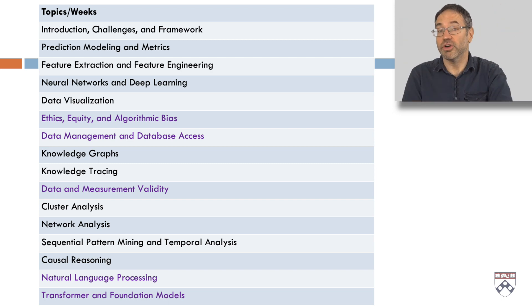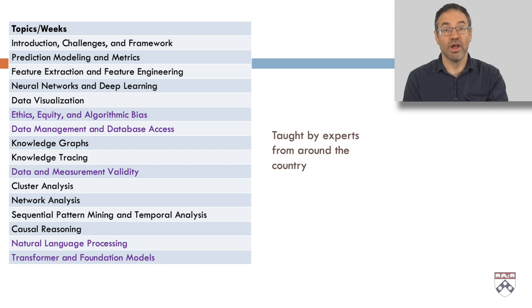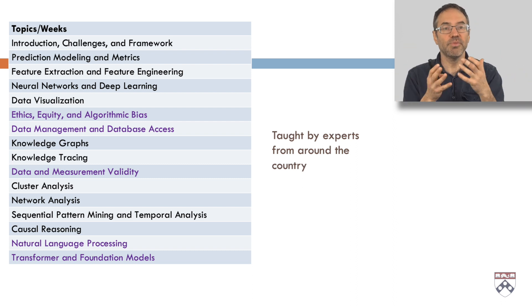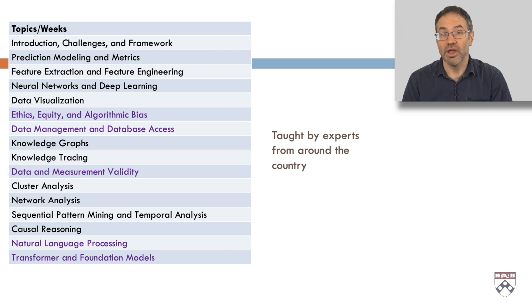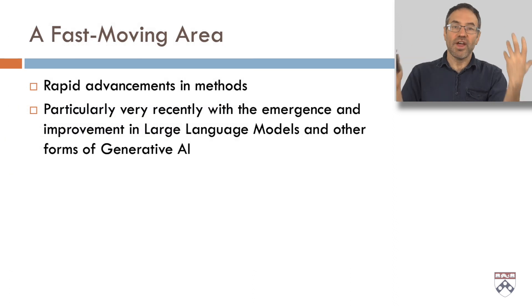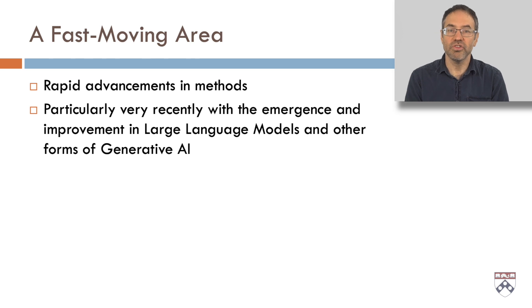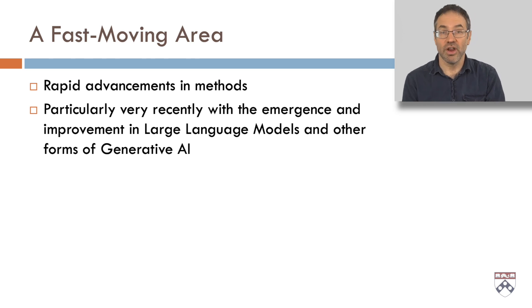So that's a lot of stuff to cover — stay with us, it's going to be fun and we're going to learn a lot together. These 17 topics were too much for us here at Penn or Florida to cover by ourselves, so we've brought together a group of great experts from around the country — some of the brightest people on these topics on this or any other planet. This is a fast-moving area, and that's been particularly true recently with the emergence and rapid improvement in large language models and other forms of generative AI. It's an exciting time to be in science.